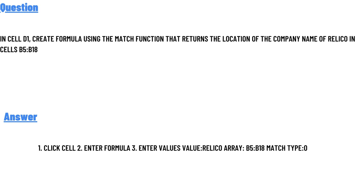The steps are: one, click cell D1; two, enter the formula; three, enter the values — the value 'RELICO', the range B5:B18, and match type zero. That is the answer to the question.